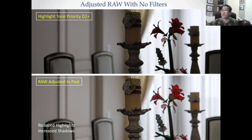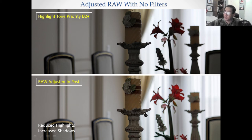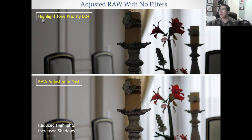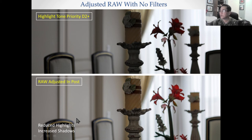Now instead of using the filters in camera, I just took the RAW image — and you could do it with JPEG as well for this example, but I happen to use the RAW — and I just used the Adobe RAW editor. I reduced the highlights and I increased the shadow. And as you can see, here's the best that the in-camera filters can do for you at a cost of ISO 200. I just used the RAW file, reduced highlight, increased the shadow — a very simple change — and I was able to get a much better image out of it.